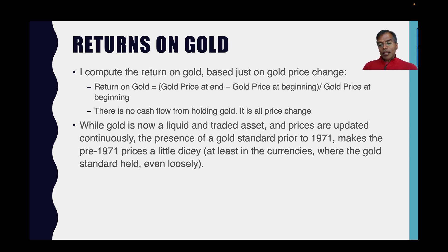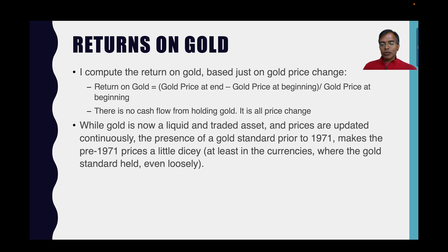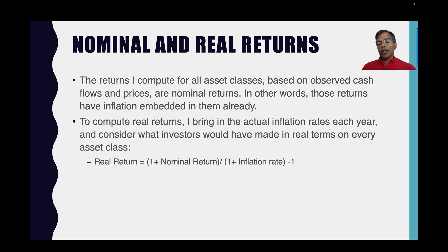For returns on gold, I take the gold price at the end of the year, divide by the gold price at the beginning of the year — the return is always based on the start-of-year price, not an average or end-of-year price, because I'm looking at the return over the course of the year. There is no cash flow from holding gold; it's all price change. A computational note: prior to 1971, because we had a gold standard, gold prices didn't move much. But since 1971, gold is a liquid and traded asset, and I use the actual gold price to get the percentage return. If you notice lower volatility in gold prices prior to 1971, it's because we operated in a very different system.